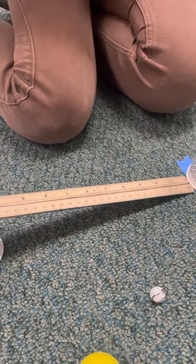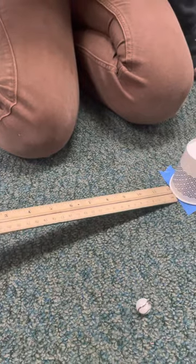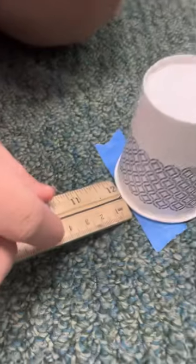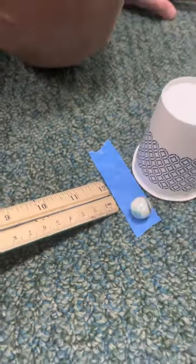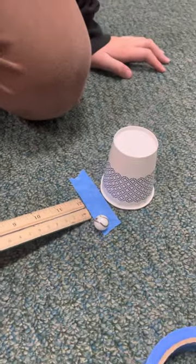So using a marble first, we're going to release the marble from different heights on the ruler. The first height is five centimeters. So you need to find five centimeters right there. Release the marble and see how it pushed the cup.